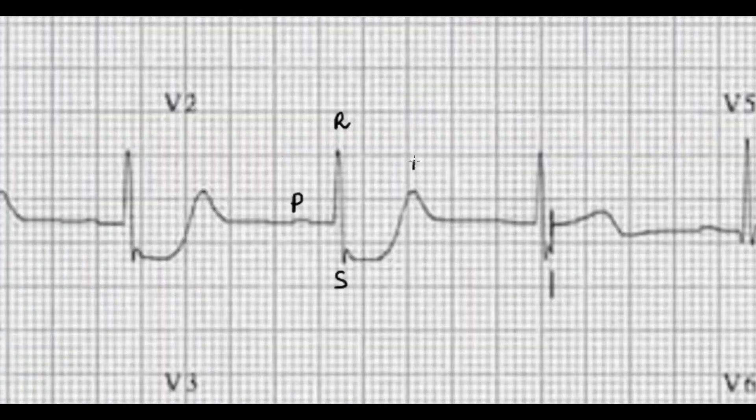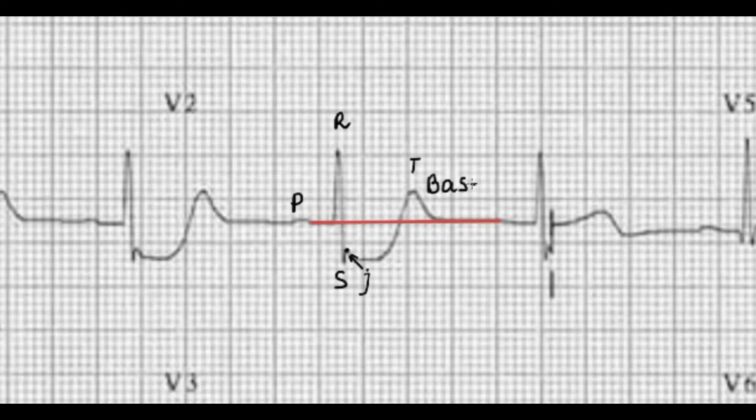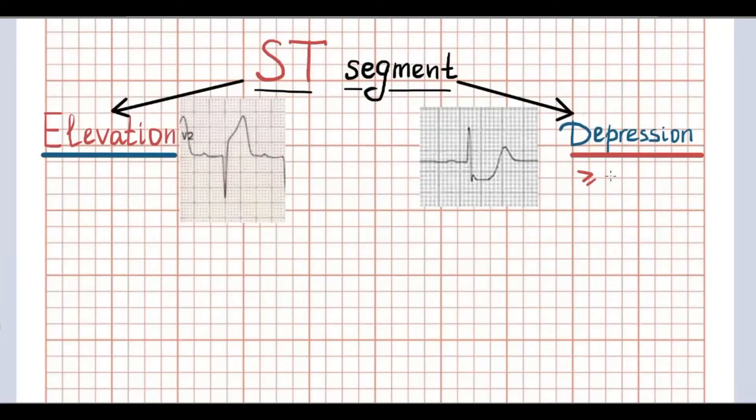The second change is when ST segment is located below the baseline. It is called depression. Look at this example. The criteria of depression is 0.5 mm below the baseline, independent from leads, age and gender.